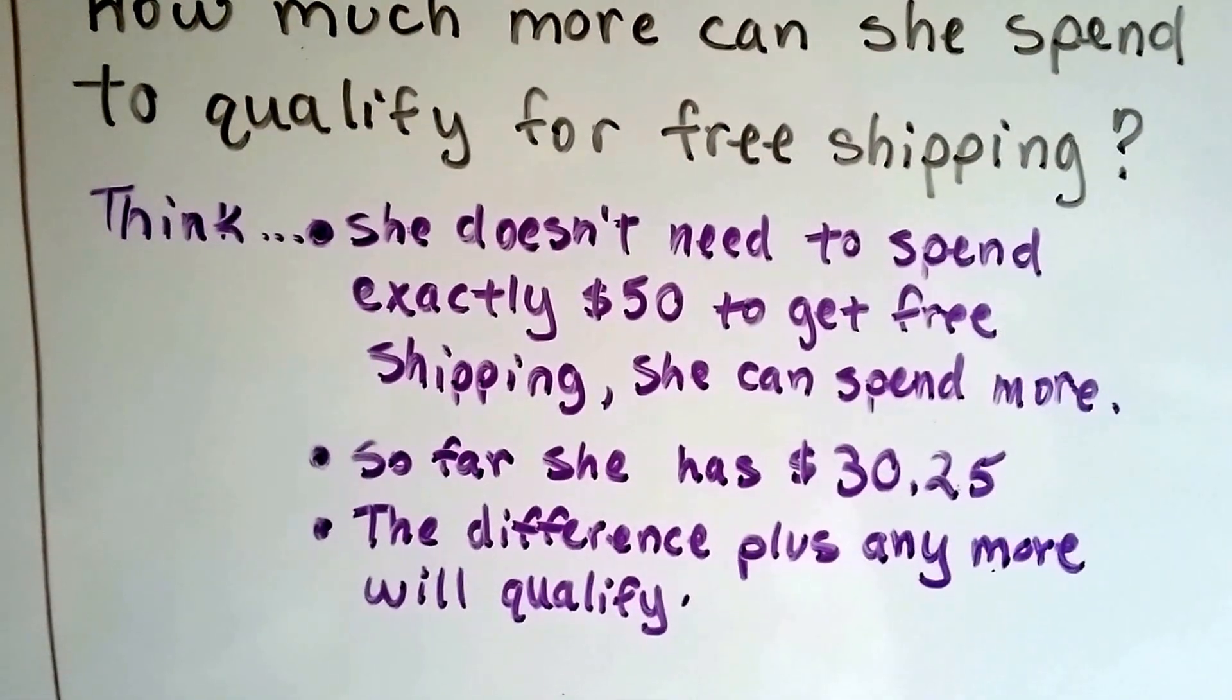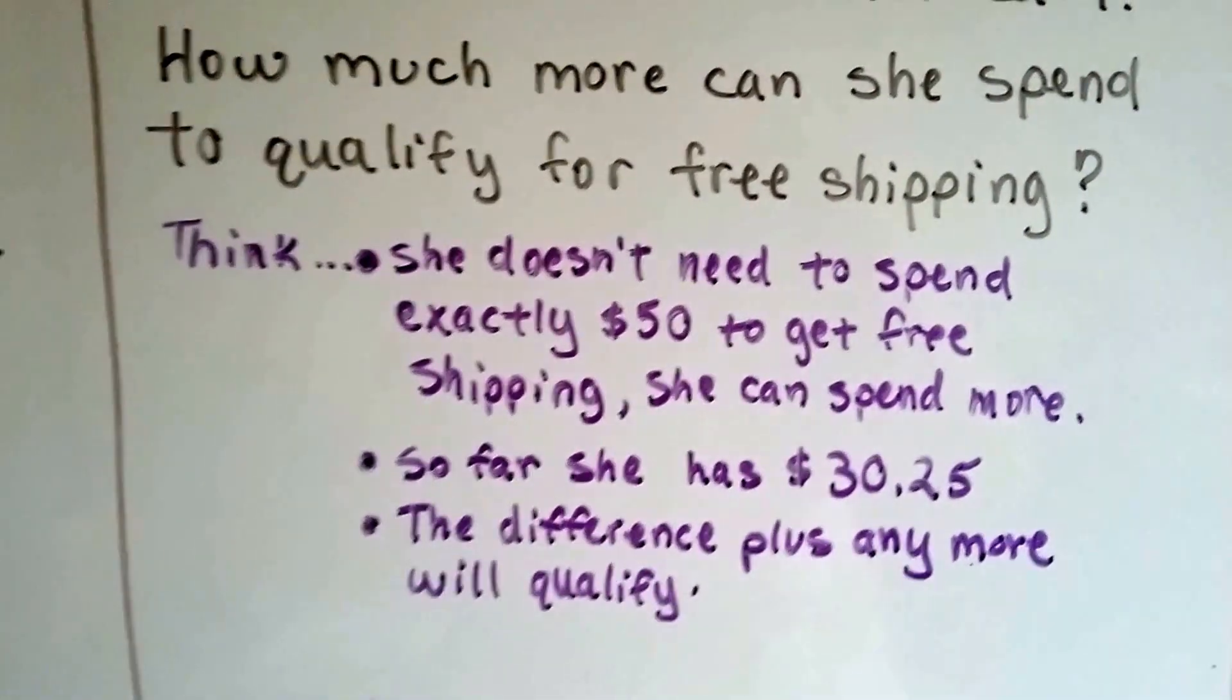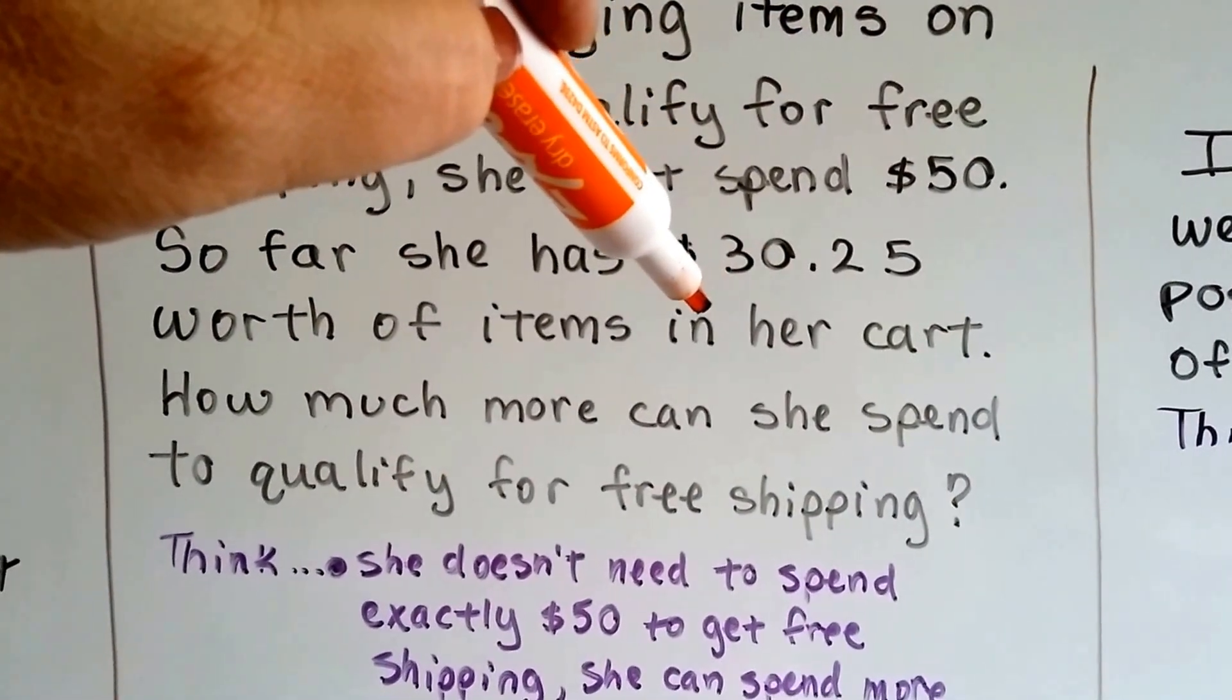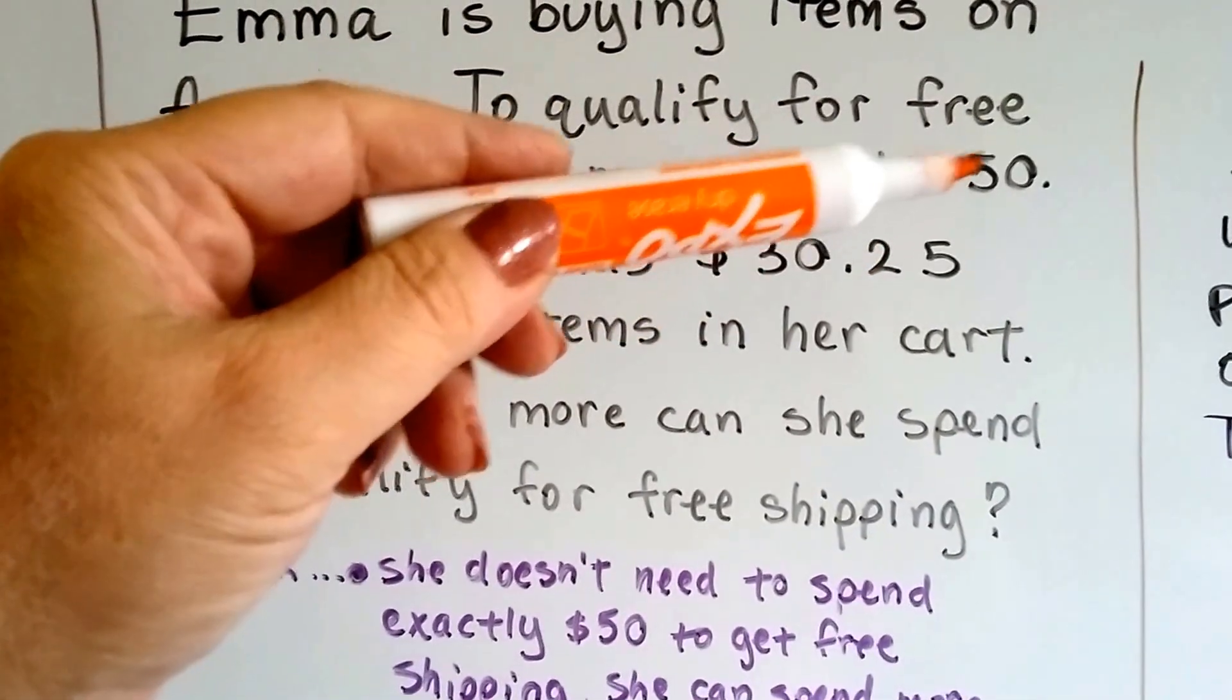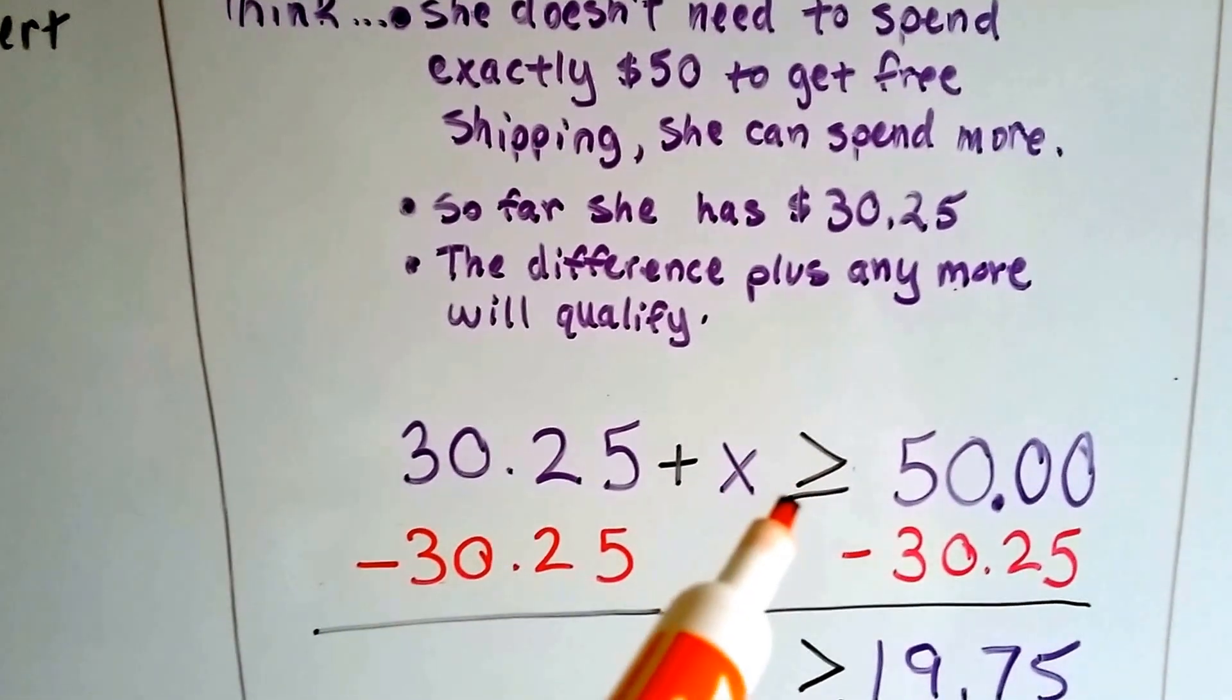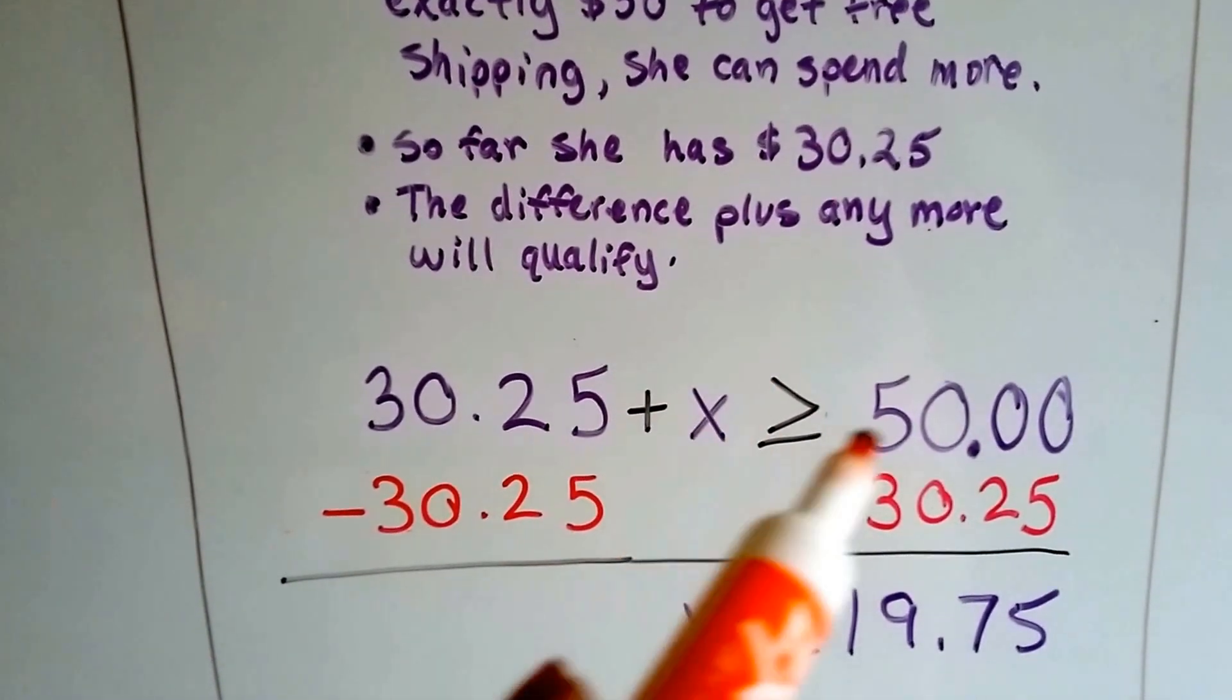So we think, she doesn't need to spend exactly $50 to get free shipping. She could spend more, right? She could spend $51. So far she has $30.25. Well, the difference plus any more will qualify for the free shipping. So we need to find the difference between the two of these. We need to add $30.25 plus the missing amount to be $50 or more. So it could be $50 and it could also be more than $50. So we're going to use a greater than or equal to sign. So $30.25 plus the amount she needs to spend is going to be greater than or equal to $50.